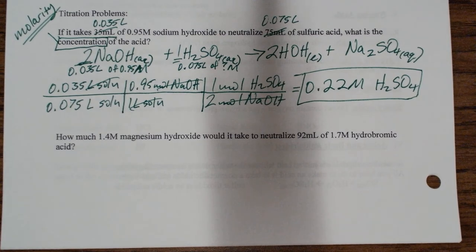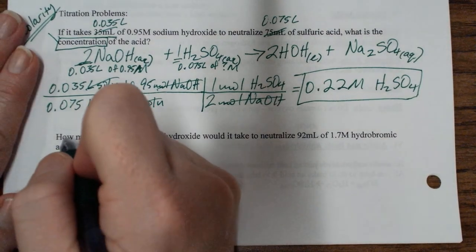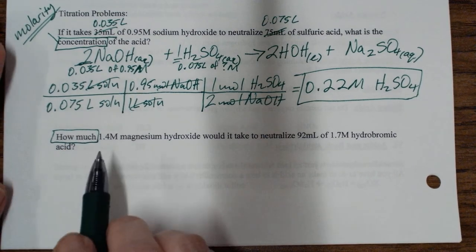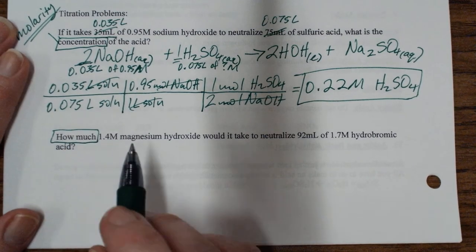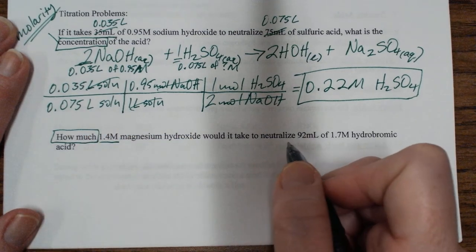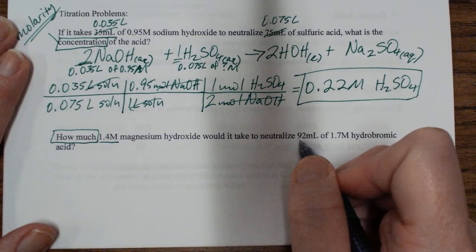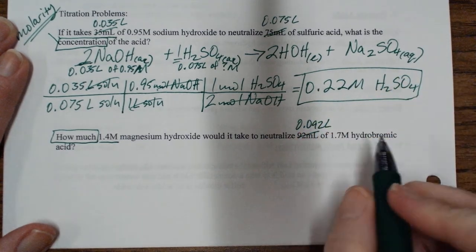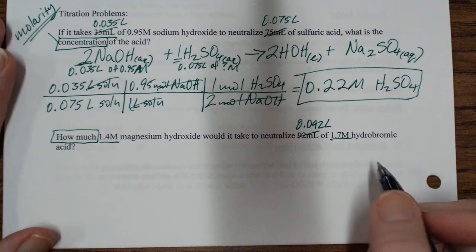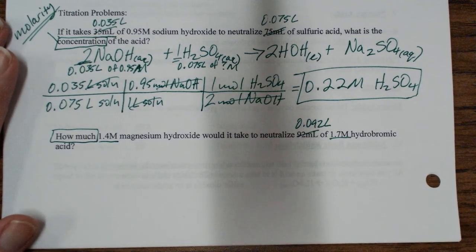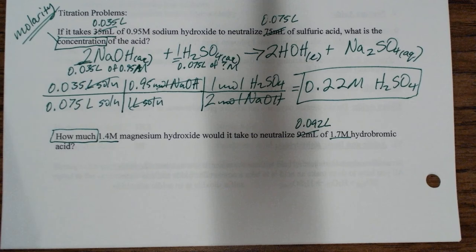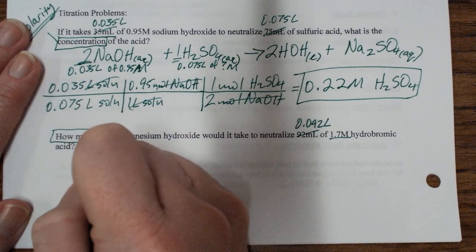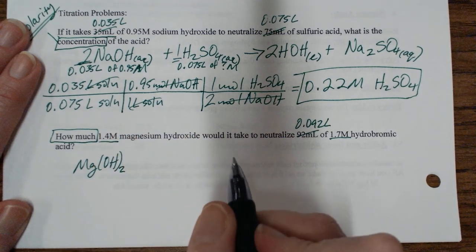Last one. I want to know how much, when I say how much, what do you think that means? Let's keep reading. Maybe you'll catch on. How much 1.4 molar magnesium hydroxide would it take to neutralize 92 milliliters? We don't really like milliliters. That's 0.092 liters of 1.7 molar hydrobromic acid. So when they say how much, they're asking for volume.